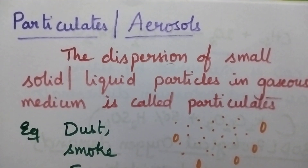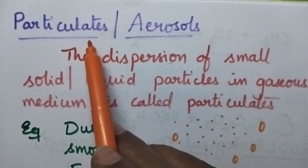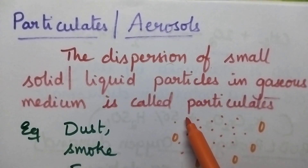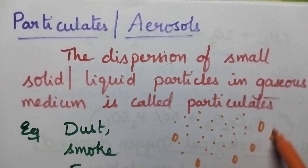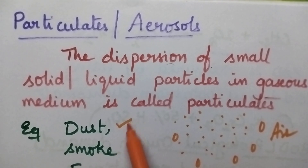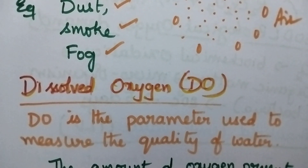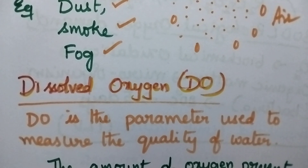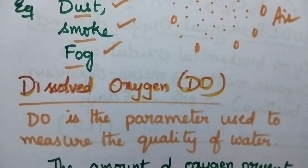Next, we will discuss about particulates or aerosols. Particulates means the dispersion of small solid particles or liquid particles in the air. That is called particulates or aerosols. Best examples include dust, smoke, and fog.